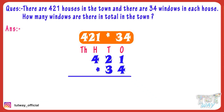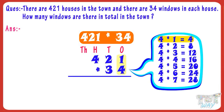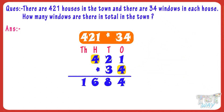Now first multiply 421 with the one's digit of 34. 4 multiplied by 1 equals 4. Write 4 in the product at 1's place. 4 multiplied by 2 equals 8. Write 8 in the product at 10's place. 4 multiplied by 4 equals 16. Write 16 in the product.